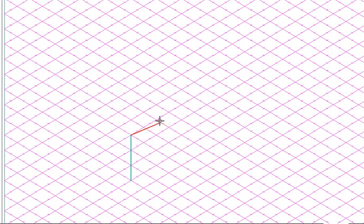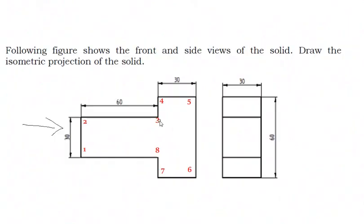From this point: 10, 20, 30, 40, 50, 60. Then point 3 to 4 is vertical, so it should be vertical. We need to calculate this height. The overall length is 60, this one is 30, so the remaining is 30. 30 divided by 2 gives 15.